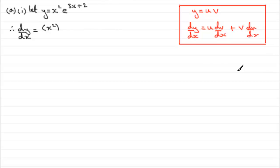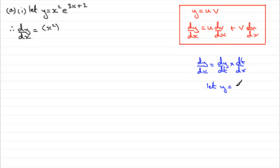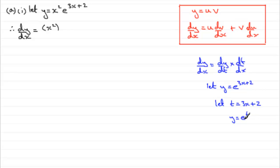Just as a reminder, the chain rule is: if you've got dy/dx and you want to find it, it's dy/dt multiplied by dt/dx. As long as you've got the same variable here and here, it's as if they cancel out and just leave you with dy/dx. So, if I was going to differentiate e to the 3x plus 2, I would let t equal the 3x plus 2. Then I've got y equals e to the t. Differentiate that with respect to t — it is e to the t, so we get e to the power 3x plus 2.